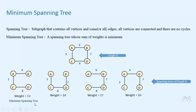If the graph contains some edges with equal weights, then more than one minimum spanning trees are possible. While if all the edges of the graph have unique weights, then there will be only one minimum spanning tree for the graph. Finding a minimum spanning tree can be useful as it gives us the most economical way of connecting all the vertices of a graph.